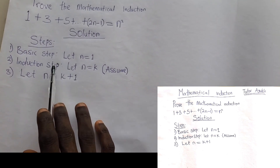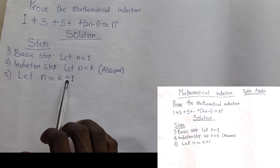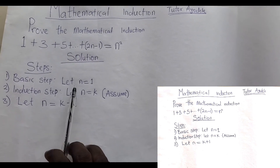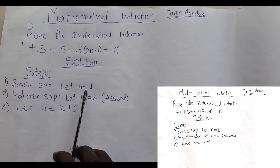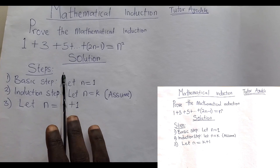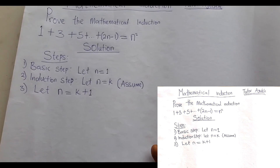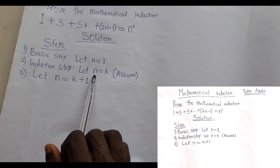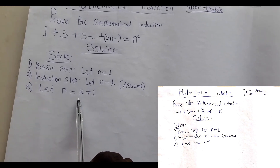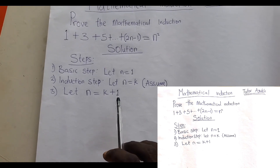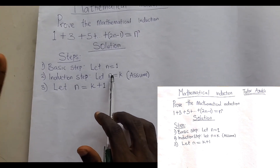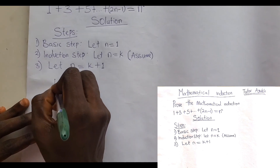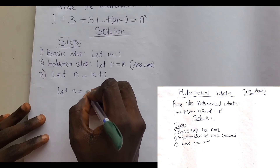There are three major steps involved in mathematical induction. Your proving does not go beyond these three. The first step, which is the basic step, is to let n equals 1. The second step is the induction step — you assume that n equals k. And the third step is n equals k plus 1. In all mathematical inductions, your steps do not go beyond these three. So let's start from the beginning: let n equal 1.